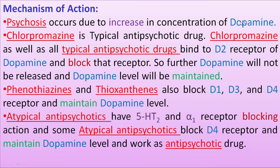Now, the mechanism of action: psychosis occurs due to an increase in the concentration of dopamine in the brain. Chlorpromazine is a typical antipsychotic drug. Chlorpromazine, as well as all typical antipsychotic drugs, binds to the D2 receptor of dopamine and blocks that receptor, so that dopamine released is inhibited and dopamine levels in the brain are maintained.